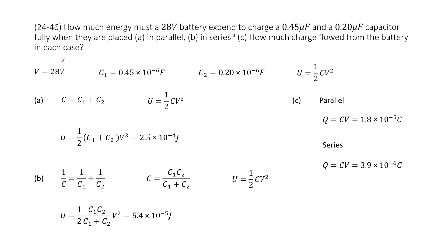So there you can see we have two capacitors, C1 and C2. We write it there. It's connected with a battery. The battery's potential difference is given there. Now we ask how much energy must these capacitors expend if they are placed in parallel or in series.